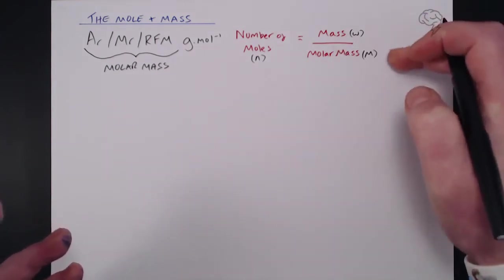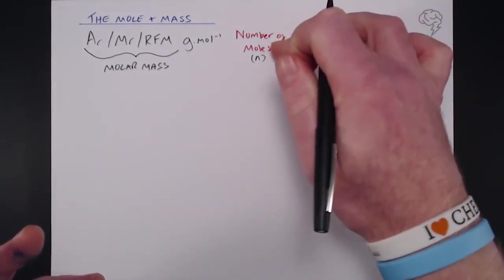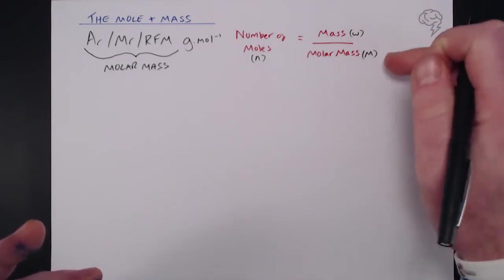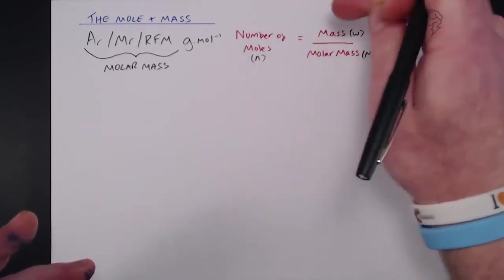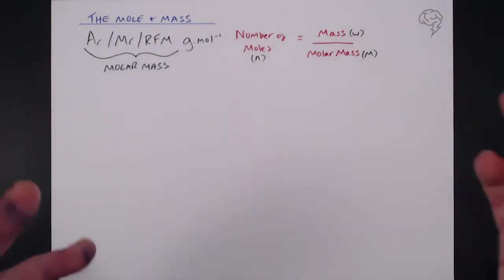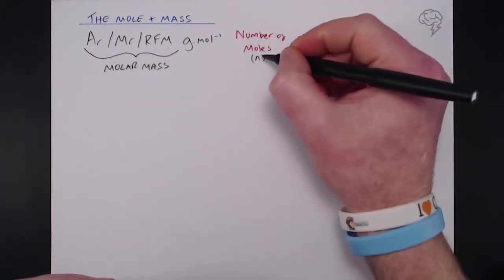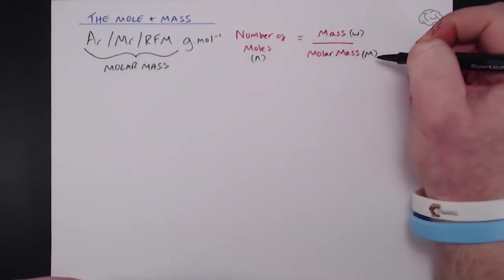Now these seem a little bit weird because number of moles is n, mass is w, and molar mass is m, because all of these actually begin with m - moles, mass and molar mass. You can't use m for them all. So little n for number of moles, W for mass and capital M for molar mass.